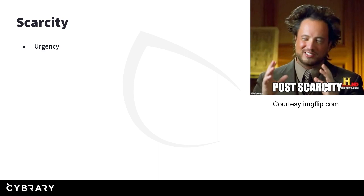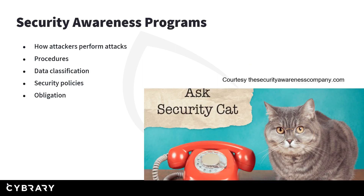Scarcity is something marketers use when selling you something — like an email saying a suit is 20% off for 24 more hours. The same concept applies to social engineering. You'll see phishing emails saying you have to send money quickly, or click a link to update your password in the next 24 hours because your account's been compromised. The goal is to create urgency so somebody doesn't stop and think that this might be an actual attack.